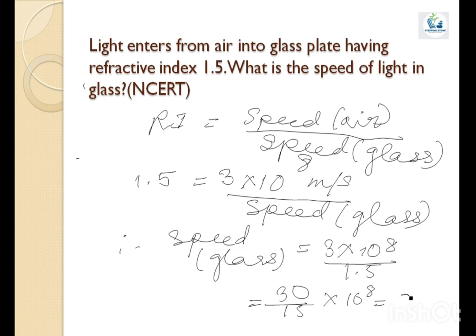So, the speed of light in glass is 2 × 10^8 meter per second.